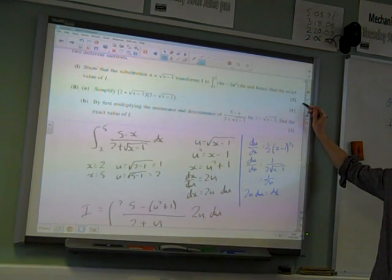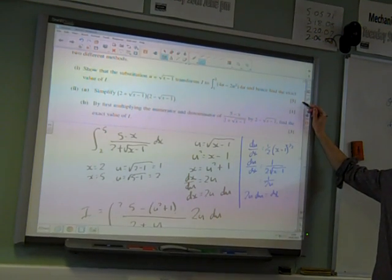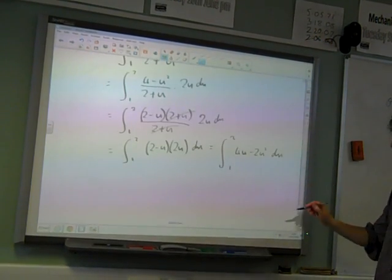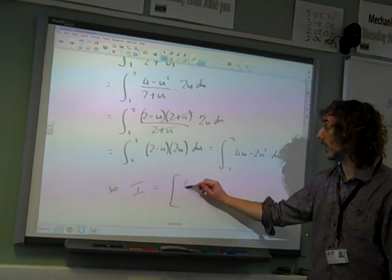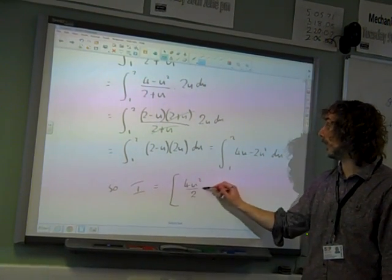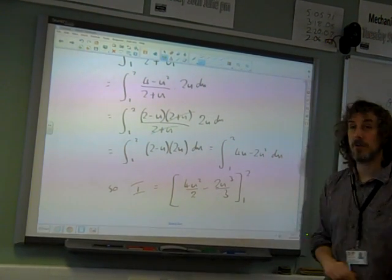That was quite tough, wasn't it? And hence, find the exact value of the integral. We've not even finished. So now we have to integrate that. 4u squared over 2 minus 2u cubed over 3, between 1 and 2.